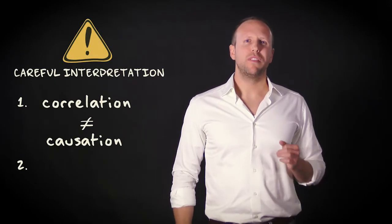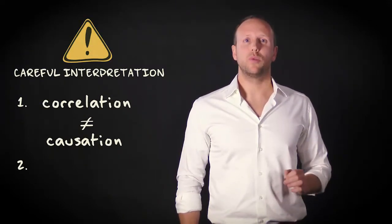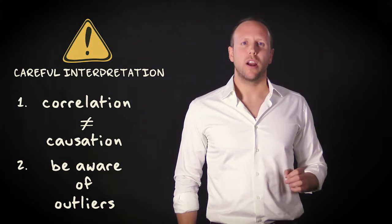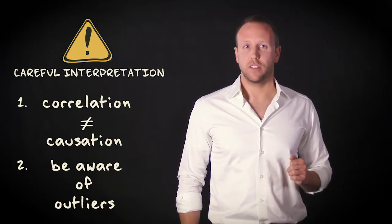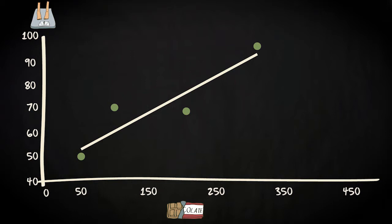A second reason why we should be very careful when interpreting regression results is that influential outliers can have strong effects on the results of an analysis. This scatterplot shows that there is a very strong positive correlation between chocolate consumption and body weight. But look at what happens when we add another case with rather extreme values on both the dependent and the independent variable.